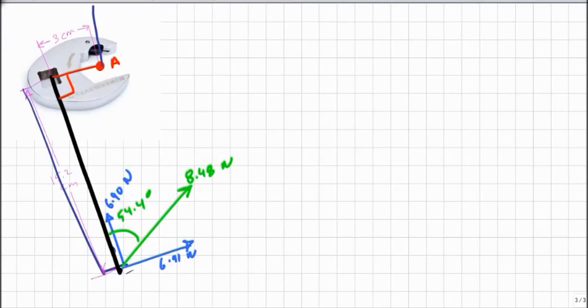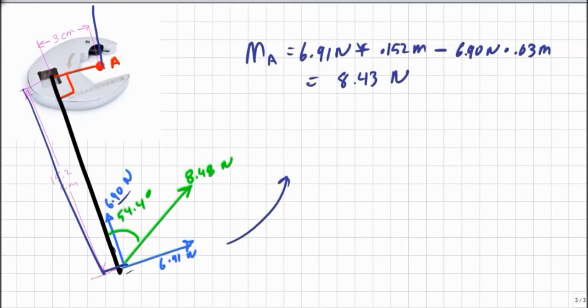How would we do that? We'll just say that our moment about point A is 6.91 newtons times our perpendicular distance of 0.152 meters. And that's positive because that's going in a counterclockwise direction. And our force of 6.90 newtons acting at a distance of 3 centimeters, if I extend that force, that's actually going clockwise. So that's a negative moment minus 6.90 newtons times 0.03 meters. And that gives me a value of 8.43 newton meters.